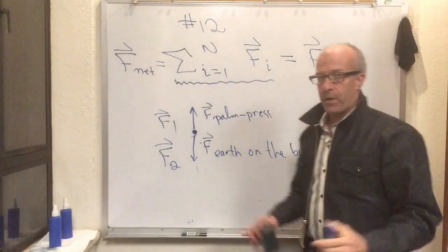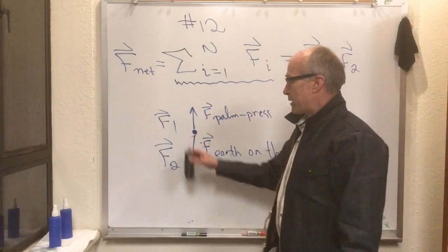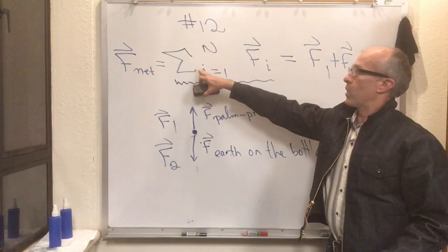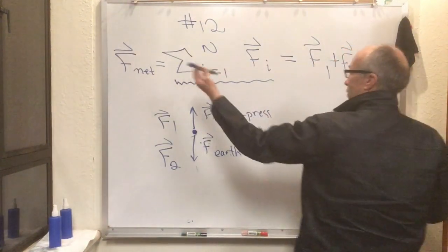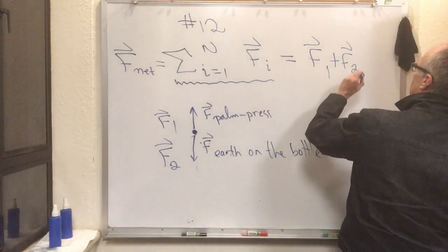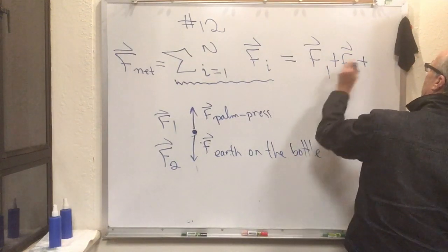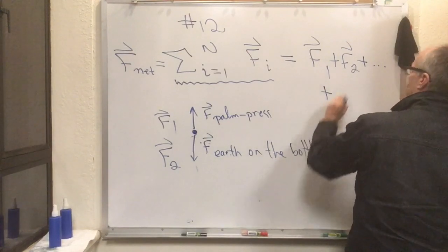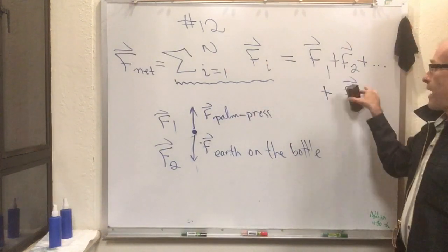But in general there might be a bunch more forces on this thing. We might have some wind resistance, who knows, maybe somebody's also attached a spring to it. So if there are n things, which is the general case, that there could be as many as you like all the way up to some number capital n, then what this stands for is F1 plus F2 plus F3 plus dot dot dot plus F sub n. So this is just a short way of writing that.